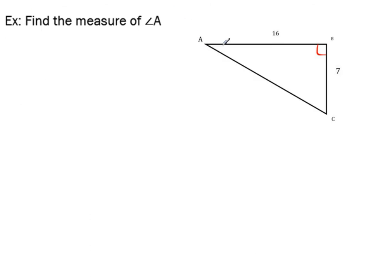So this one asks us to find angle A. So I'm just going to label A over here. And you can see I got this side right here, 16, and this side down the side is 7. So the first thing I do when I do these questions is label my sides.